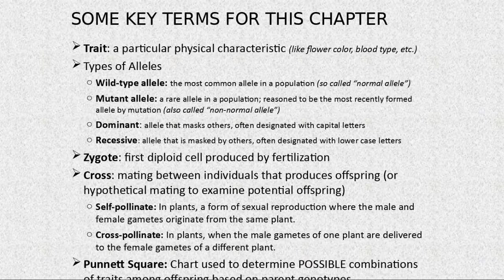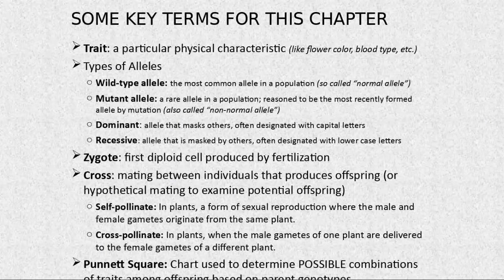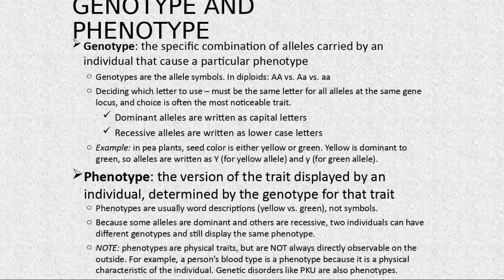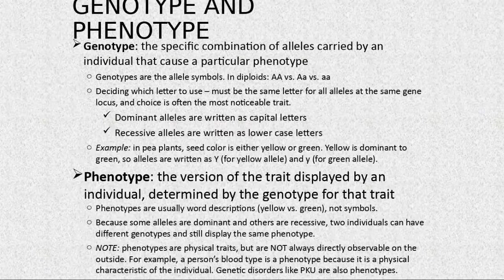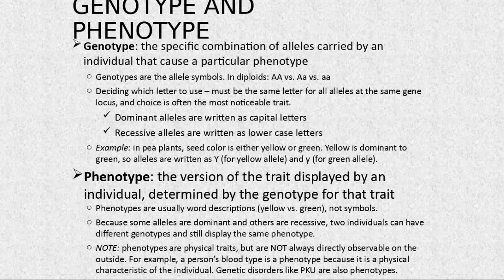Genotype is the combination of alleles carried by an individual. The genotype can be either dominant or recessive — either double dominant (homozygous), heterozygous, or homozygous recessive. Phenotype is the version of the trait displayed by an individual — I can see it, like the color of your eyes or hair. But some phenotypes, like blood type, are not visually apparent.